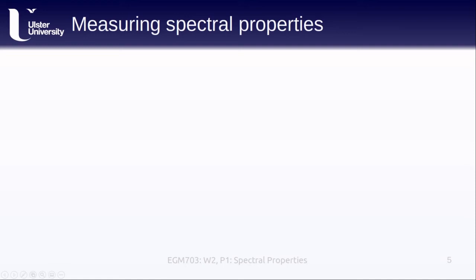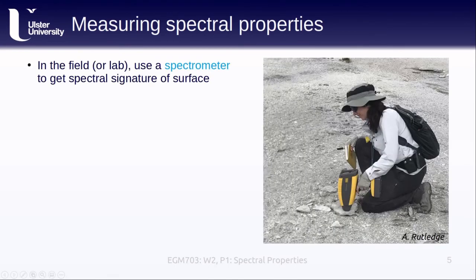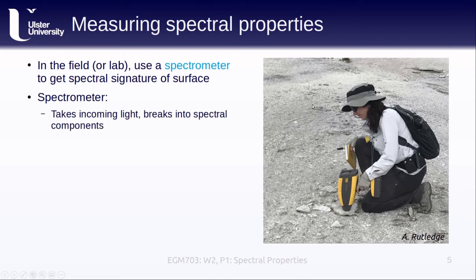In order to use the spectral properties of different objects, though, we first have to measure those spectral properties. In the field, or in the lab, we use an instrument called a spectrometer. A spectrometer, seen here in action somewhere in Arizona, takes the incoming light and breaks it into its individual spectral components, similar to how a prism works.